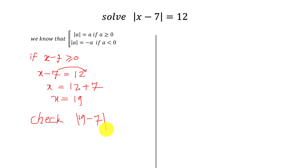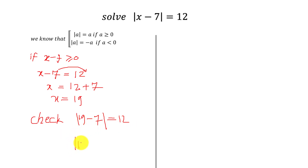We get x equals 19. We check: the absolute value of 19 minus 7 equals the absolute value of 12, which equals 12. True.